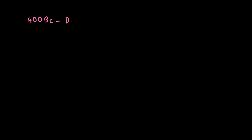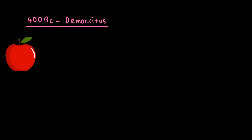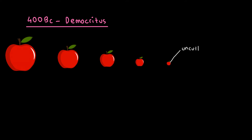It all begins in the year 400 BC with Democritus. He said that if you take something and cut it in half enough times, you'll eventually end up with something that is uncuttable, or atomos, which is where the word atom comes from.